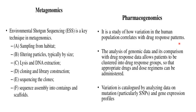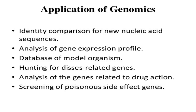Pharmacogenomics is the study of how variation in the human population correlates with drug response patterns. Analysis of genomic data and its comparison with drug response data allows patients to be clustered into drug response groups, so that appropriate drugs and dose regimens can be administered. Variation is catalogued by analyzing the data of mutants, particularly single nucleotide polymorphisms and gene expression profiles.